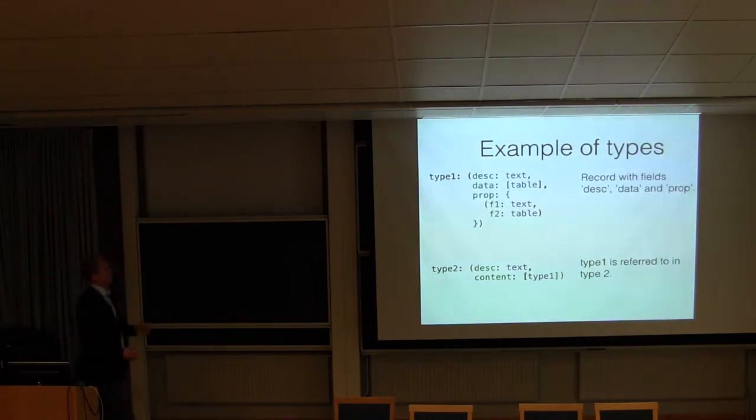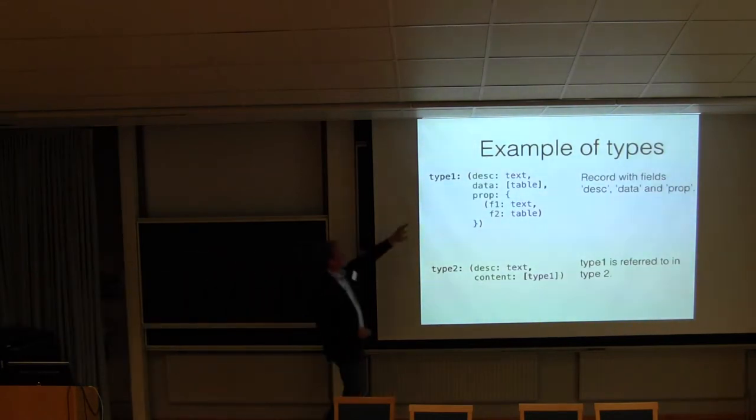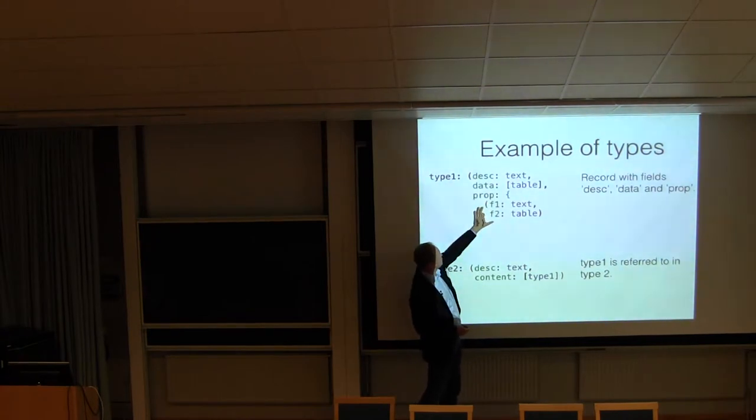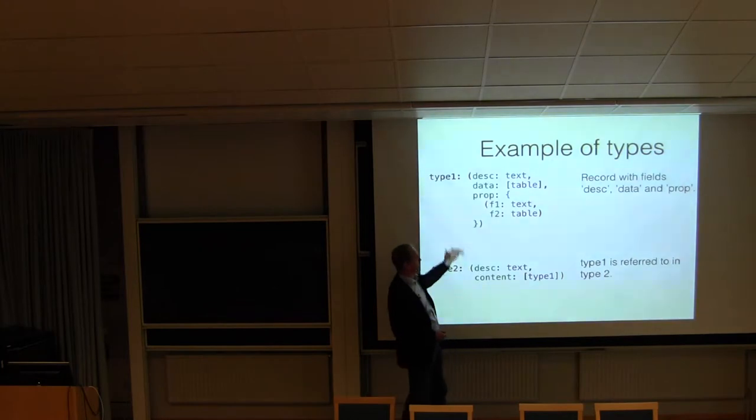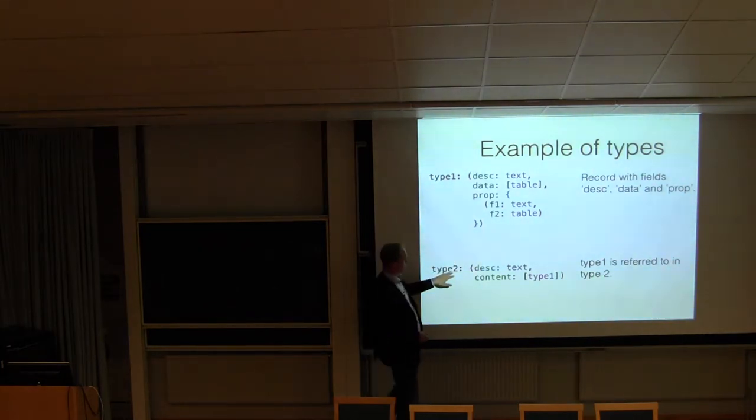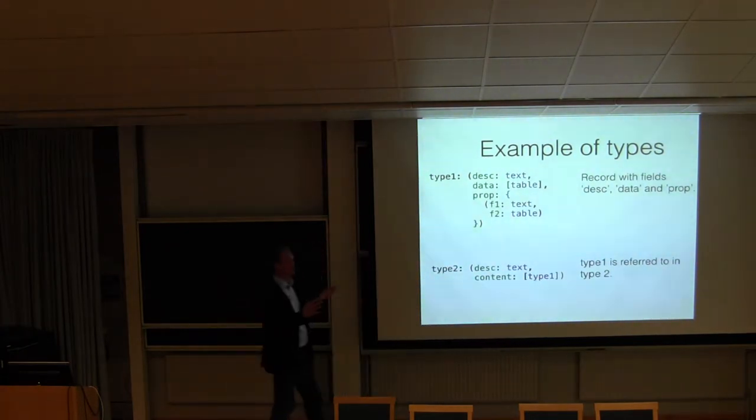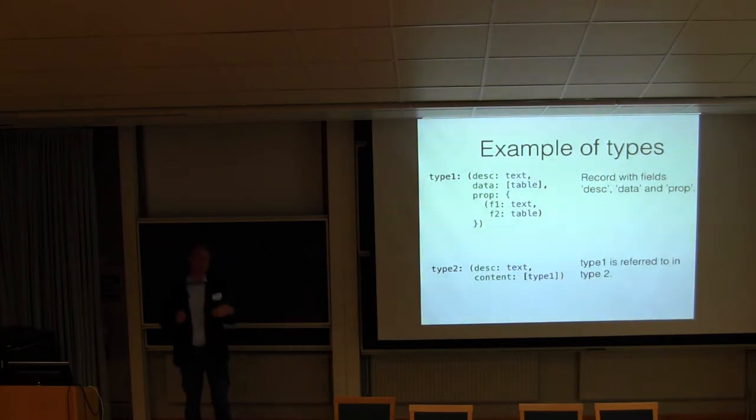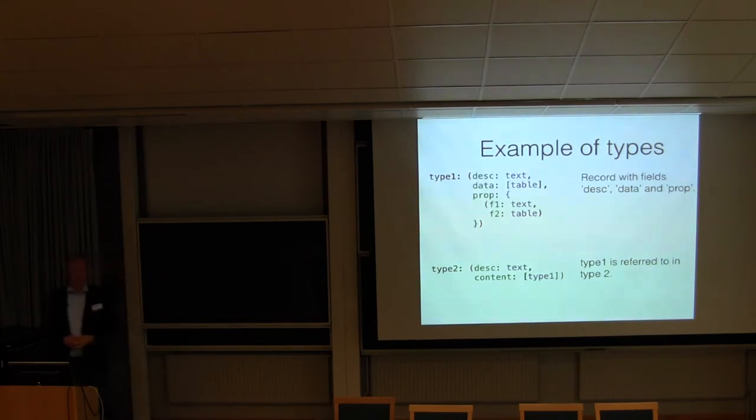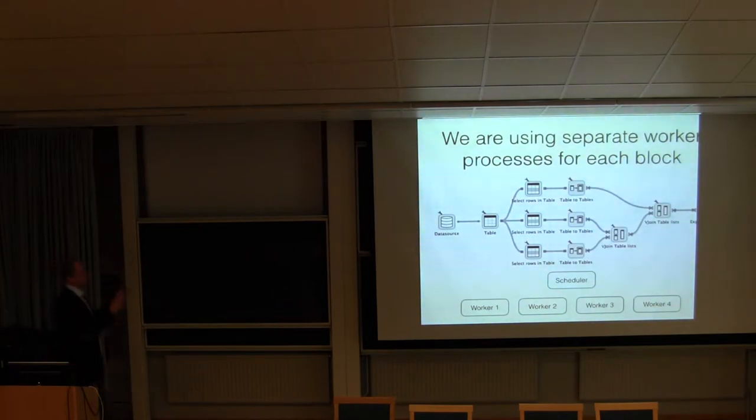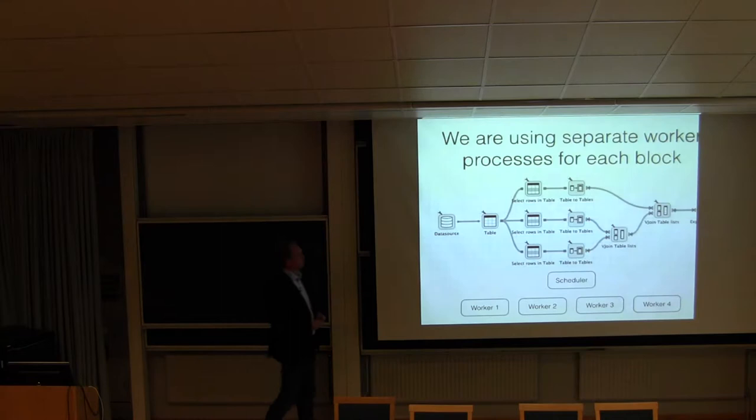And just an example of how a type could be defined. The parentheses are defining a record. And we have three fields called description, data and property. The description is a text. The data is a list of tables. The property is a dictionary of named tuples with the fields F1 and F2 which are text and table. So I can inherit these types in the next type, for example. So I use a list of type 1 here. So this way I can build data types which match the application I'm working with for the context I'm working with. I will demonstrate the software later on. But it looks something like this when you build a simple flow.